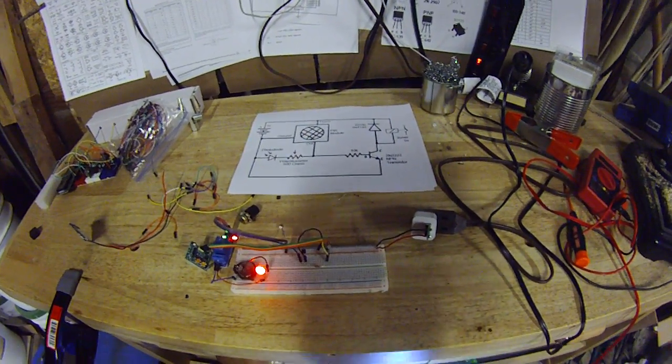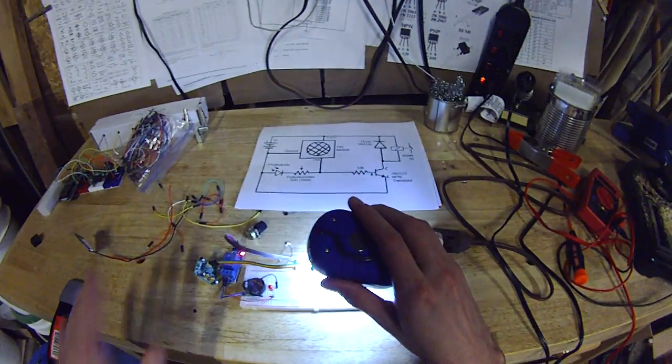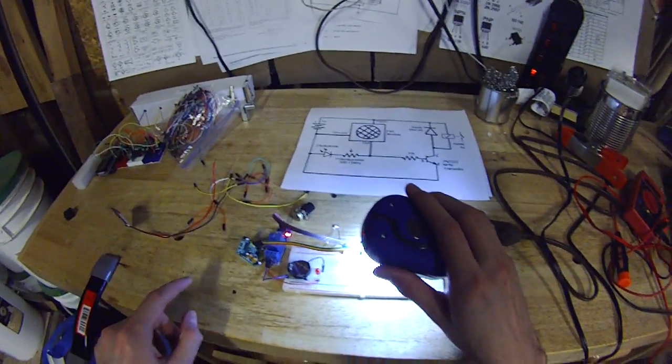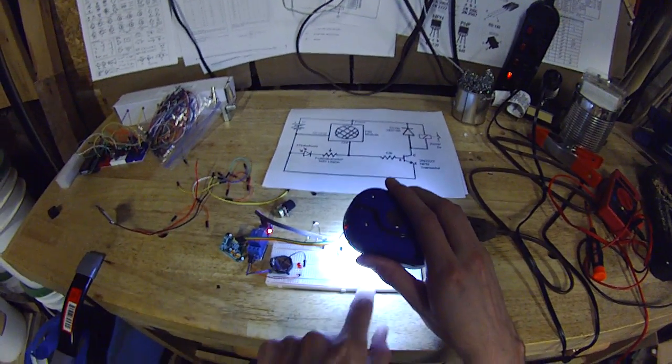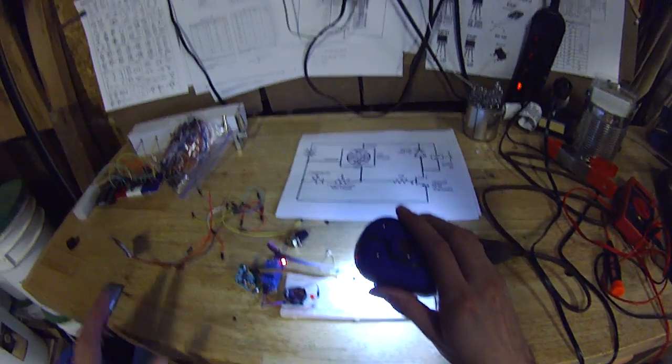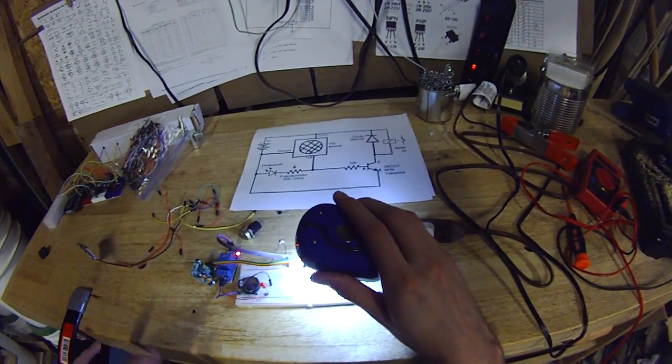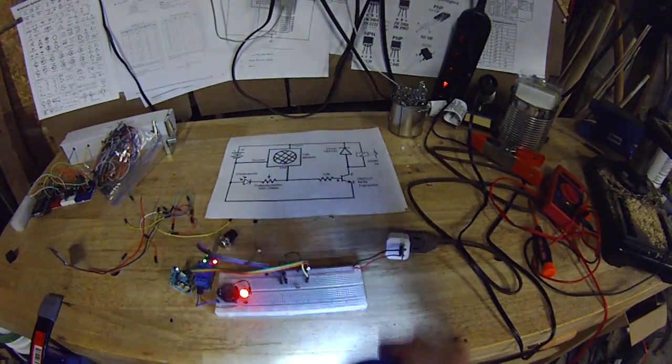And then when I reintroduce light onto the photo diode, it doesn't detect my movement anymore. Technically it still does. It's just being ignored because the signal is being shorted to ground. So it's ignoring my movement. And that is the circuit there.